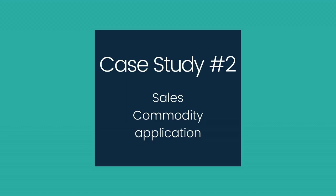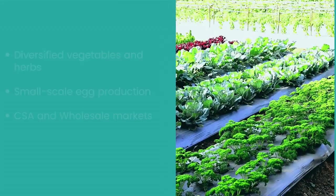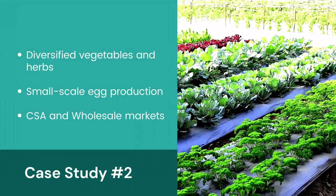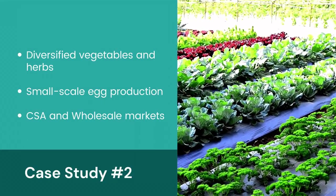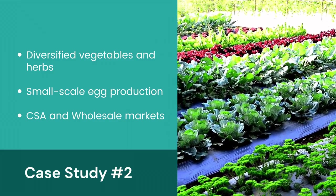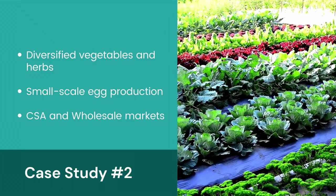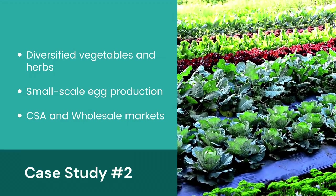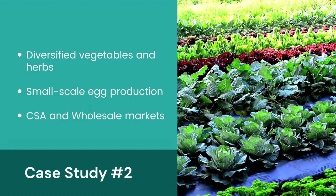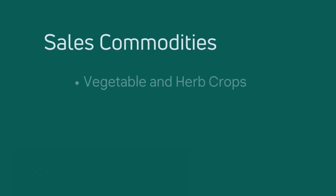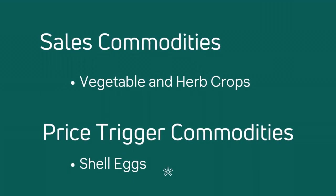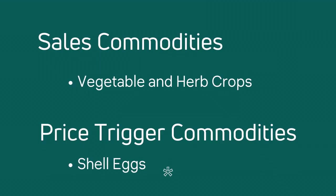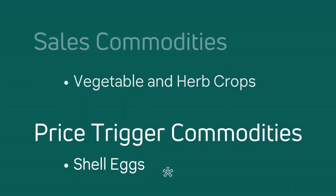Now let's look at an example of someone applying for commodities that fall under the sales commodity category. In the second case study, a farmer runs a diversified operation that sells a variety of vegetables and herbs through both the CSA program and various wholesale markets. The farm also produces shell eggs that are an add-on option for CSA members. In this scenario, the farmer would apply for commodities that fall under sales commodity as well as price trigger.